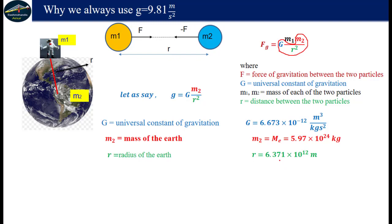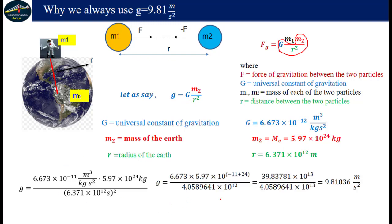Now small g equals capital G times m2 divided by r squared. When we substitute these values using mathematical calculation, this equals 9.81036 meters per second squared, approximately 9.81.